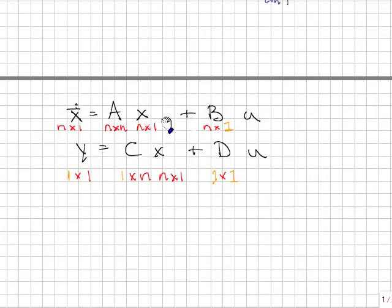x dot is equal to Ax plus Bu, y is equal to Cx plus Du. This represents an nth-order differential equation, where A is an n-by-n matrix.